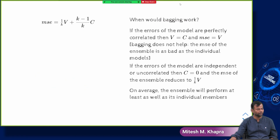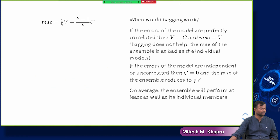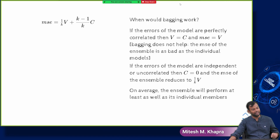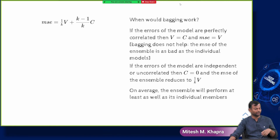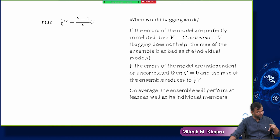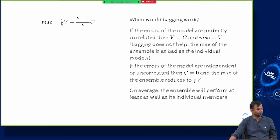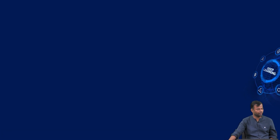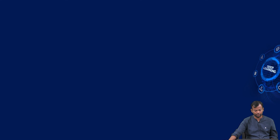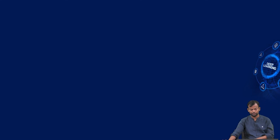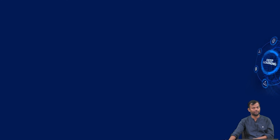Can bagging be done using different features on different models? Bagging by definition is when you have the same model trained on different subsets of the training data, not different features. But using different feature subsets is also a possibility. That is all about bagging. The next topic we will look at is dropout.